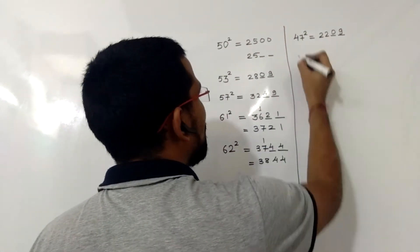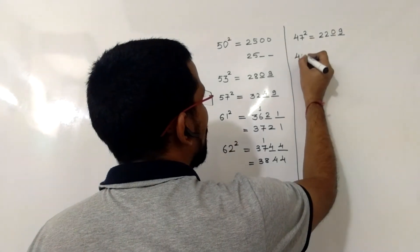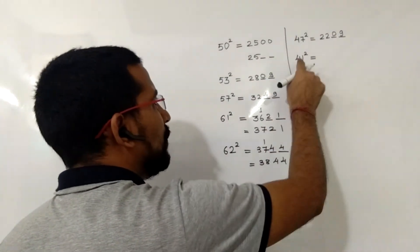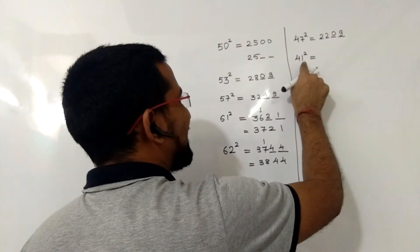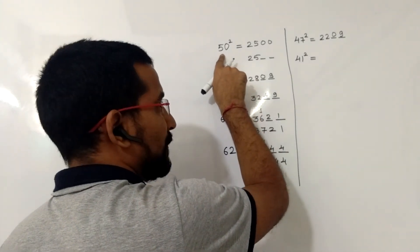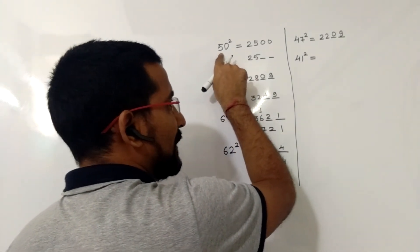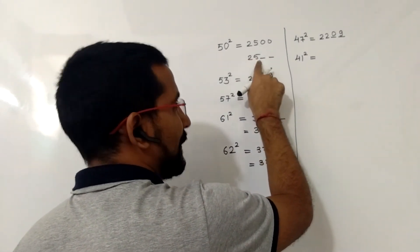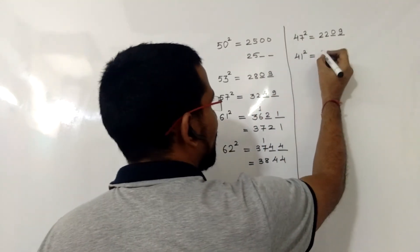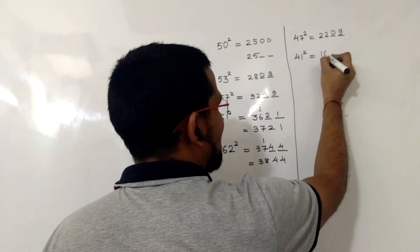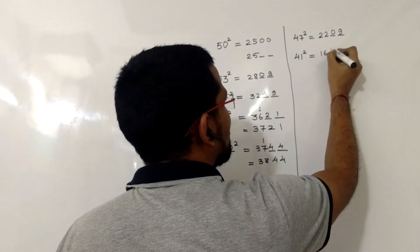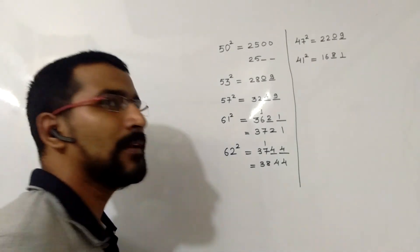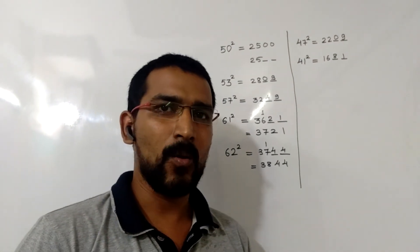Another example: 41 squared. 41 is 9 less than 50, so we subtract 9 from 25, giving 16. The square of 9 is 81, so the answer is 1681.